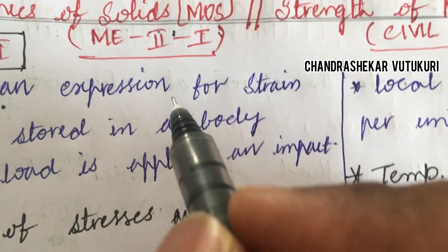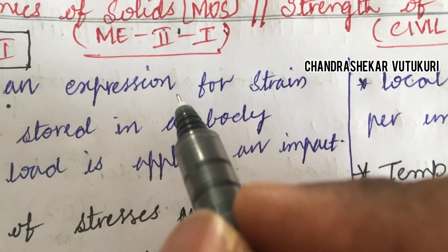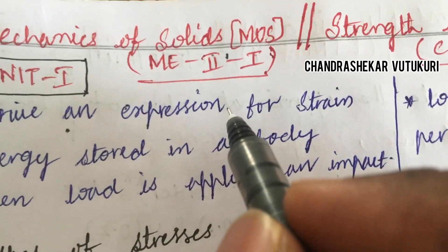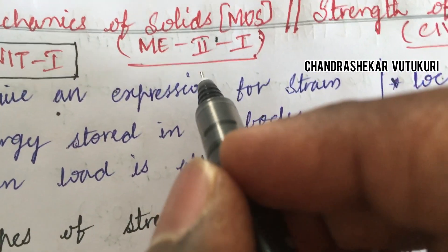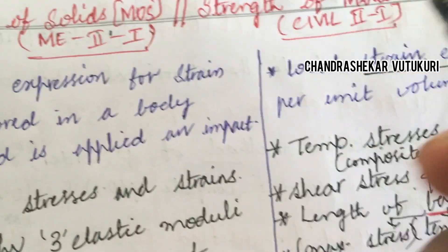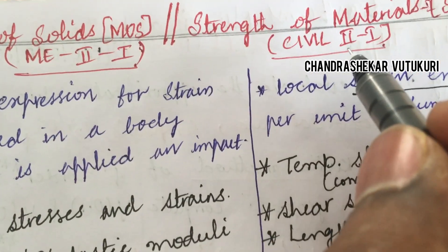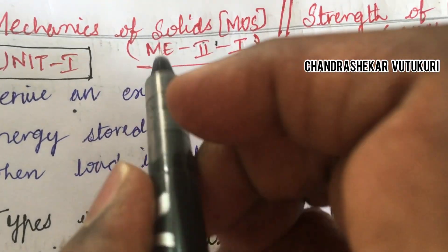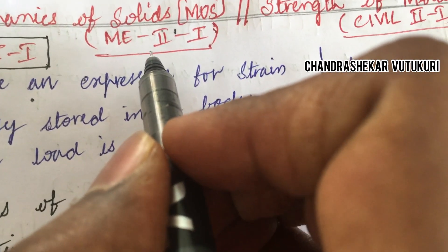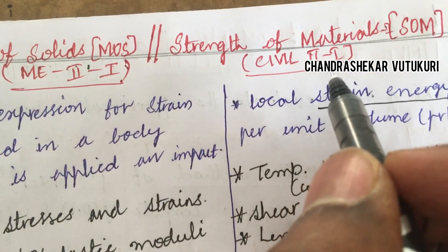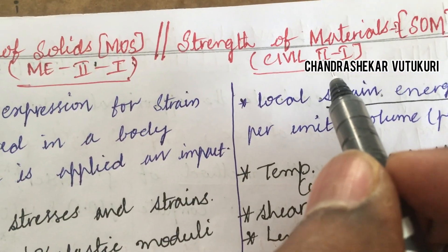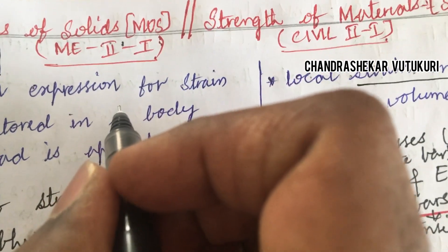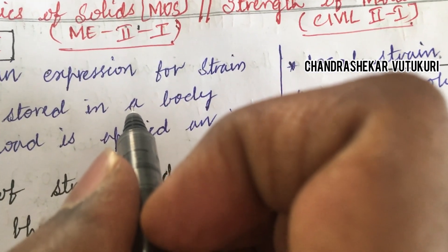Welcome back students, hope you all are doing preparations for your external examination. I have come up with some important questions for mechanical second year first semester as well as civil second year first semester — a common subject with different naming: Mechanics of Solids for mechanical second year and Strength of Materials for civil second year first semester under JNTUH R18 as well as R16 regulation.